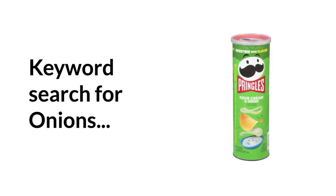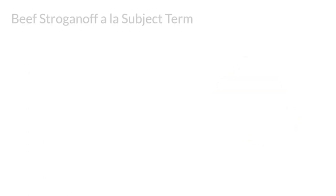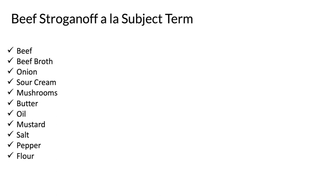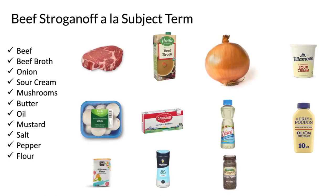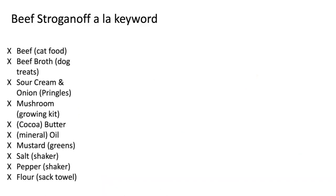Here's another example. A keyword search for onions might give us sour cream and onion chips, while a subject search gives us actual onions. Many of our searches include multiple items. If we were searching for ingredients to make a beef stroganoff, using subject terms means we can be fairly confident we'll find the right items — whereas if we are only searching with keywords, we might end up with a pretty unappetizing meal.